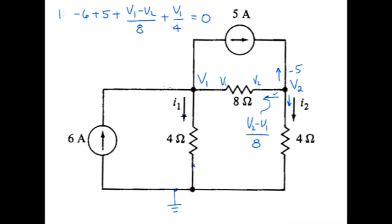And then on the bottom current, we have V2 on one side of the resistor. This side is zero. And then divide that by four to get the current. So at node two, we sum those currents to get V2 minus V1 over 8 minus five plus V2 over 4 equals zero.